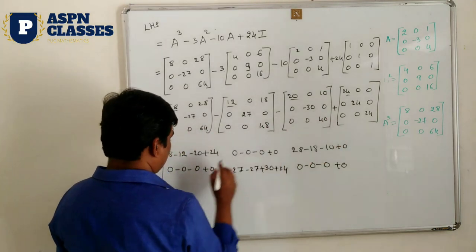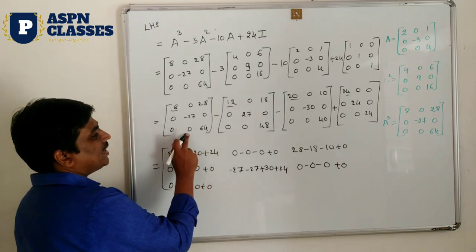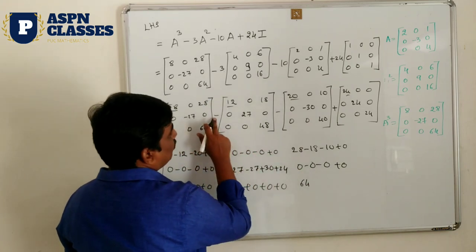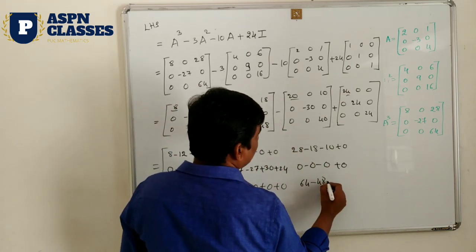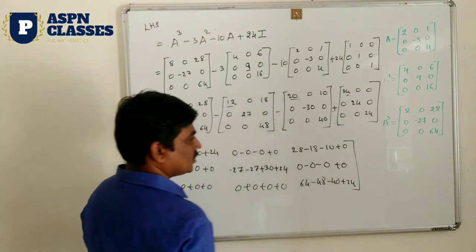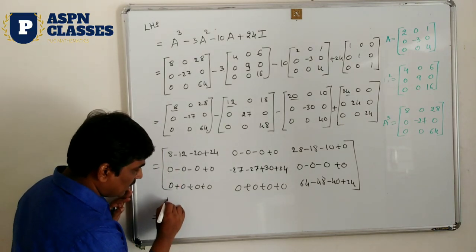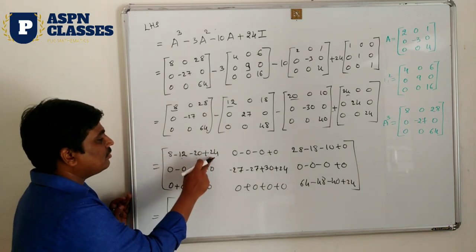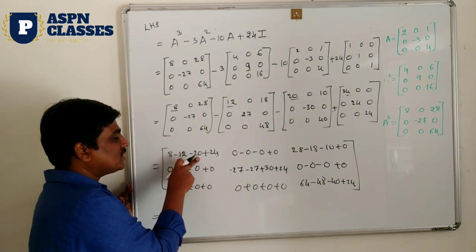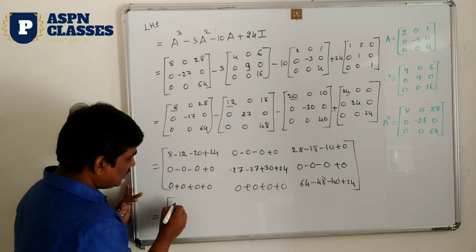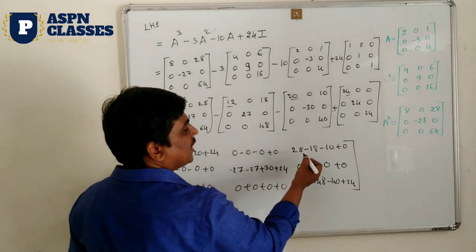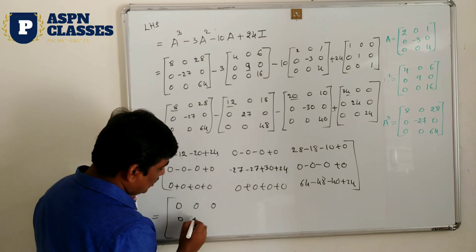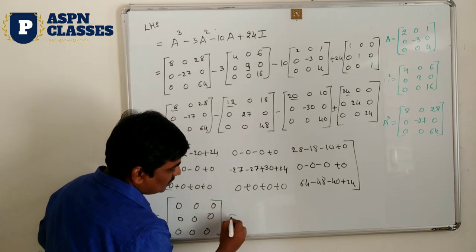Element (3,3): 64 - 48 - 40 + 24 = 0. Check: 8 + 24 = 32, and -12 - 20 = -32, so +32 - 32 = 0. Similarly 28 - 18 - 10 = 0. All elements are 0, meaning this is the zero matrix. This is your RHS answer — LHS equals zero matrix, proven.